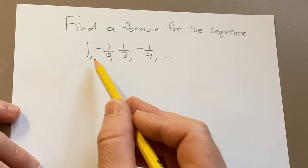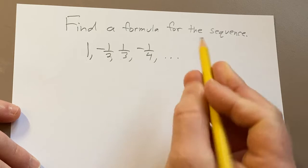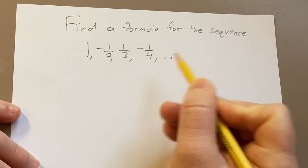So here we have the terms of the sequence: one, negative one-half, one-third, negative one-fourth, and then these three dots here indicate that it goes on forever.